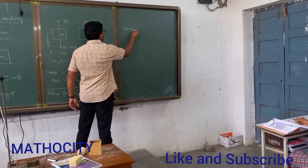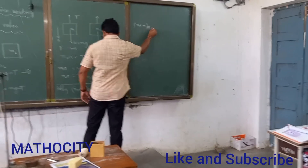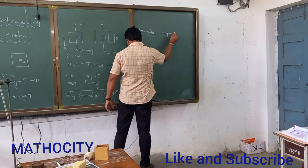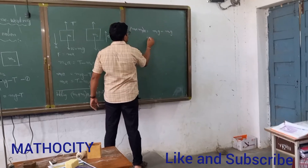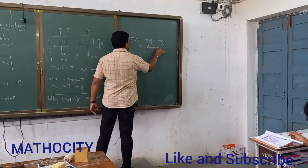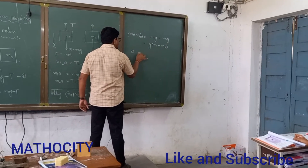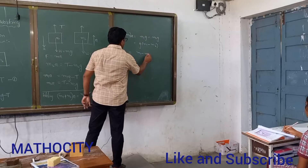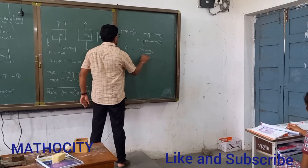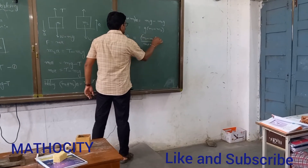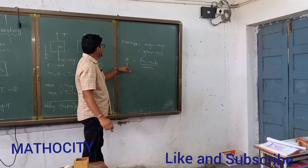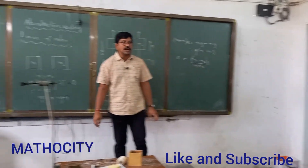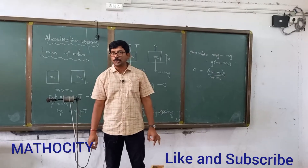After cancellation we have M1A plus M2A equals M1G minus M2G. G is a common factor on the right side, so: A times (M1 plus M2) equals (M1 minus M2) times G. Making A the subject, the acceleration produced in the string is: A equals (M1 minus M2) times G divided by (M1 plus M2). This is the acceleration produced in the string.